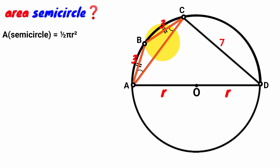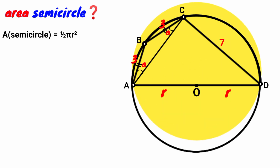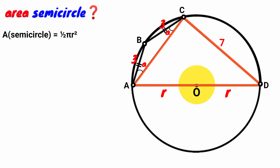Therefore, if we let this base angle be A, this one must also be A. Now, this angle is subtended by side AD, which is a diameter of the circle. We know the angle subtended by a diameter to the circumference of a circle is an angle of a semicircle, which is a right angle. So this angle here is a right angle.